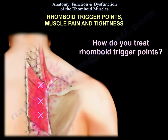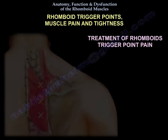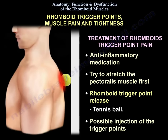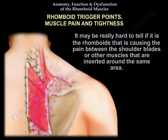How do you treat rhomboid trigger points? Give the patient anti-inflammatory medication. Try stretching the pectoralis first. Perform rhomboid trigger point release. Treat it with a tennis ball. And consider possible injection of the trigger points. It may be really hard to tell if the rhomboids are causing the pain between the shoulder blades or other muscles inserted around the same area.